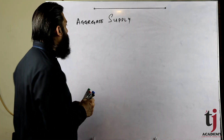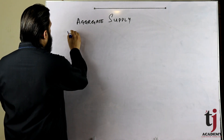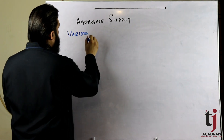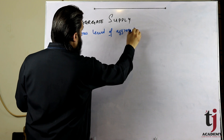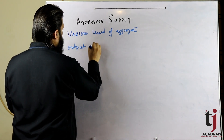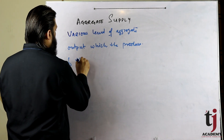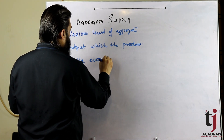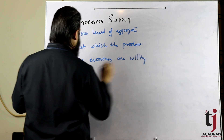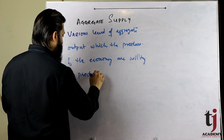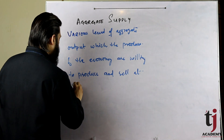आज हम discuss करेंगे aggregate supply. Aggregate supply क्या है पहले इसको देख लेते हैं। Aggregate supply shows various levels of aggregate output which the producers of the economy are willing to produce and sell at various levels of prices.